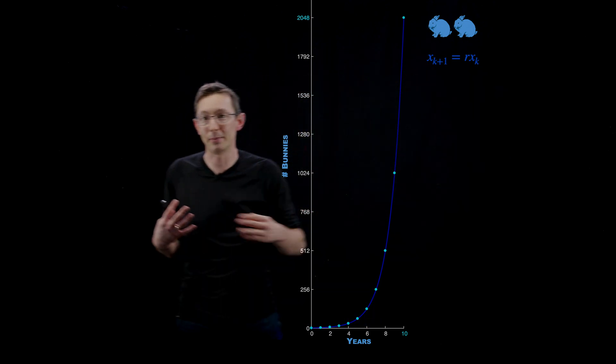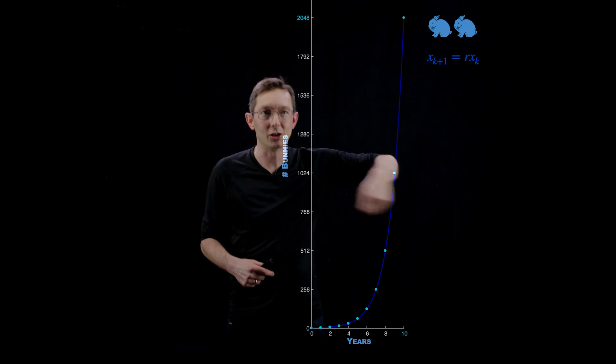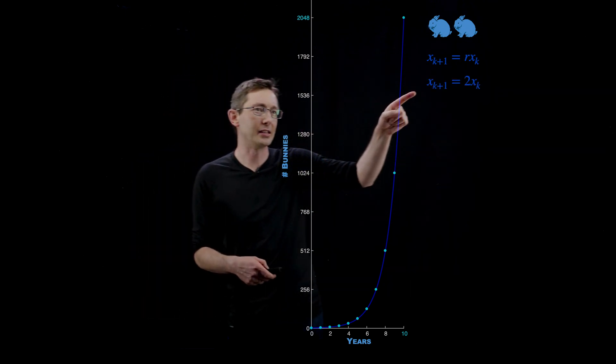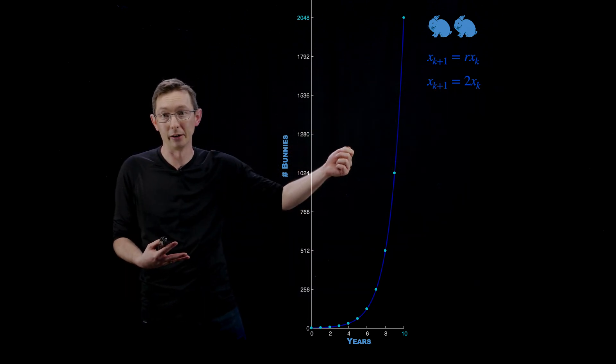And r is how much the bunny population increases from year to year. So in our case we have r equals 2 because the bunny population doubles each year.